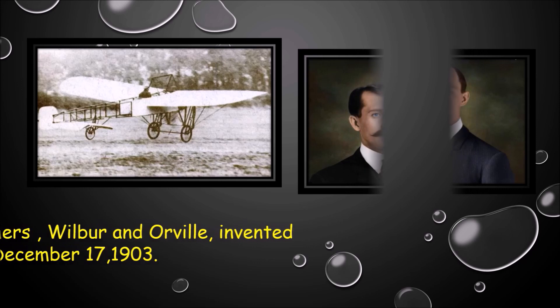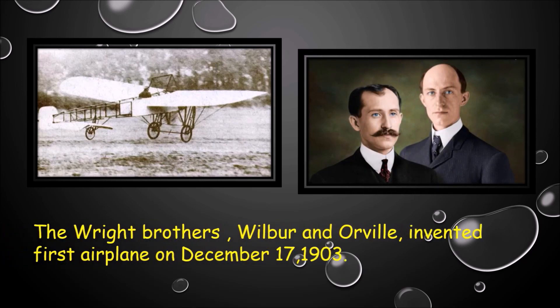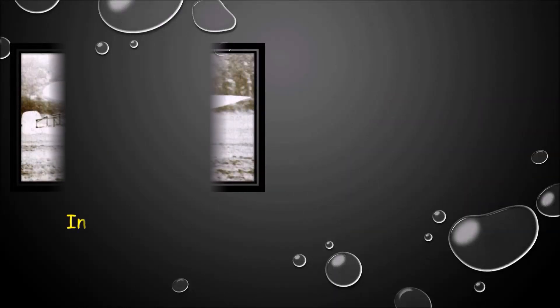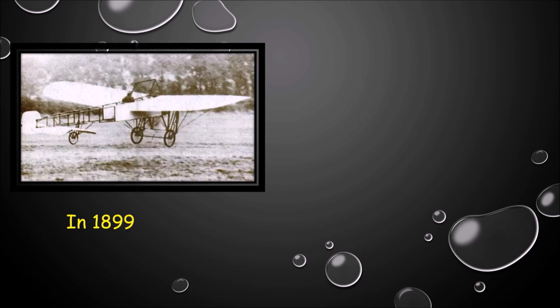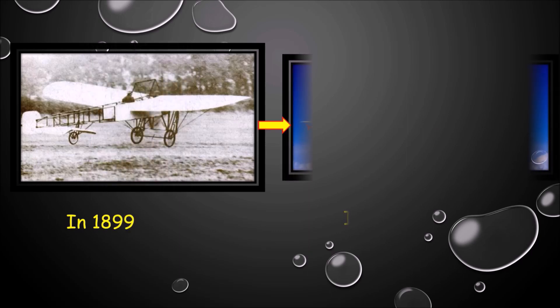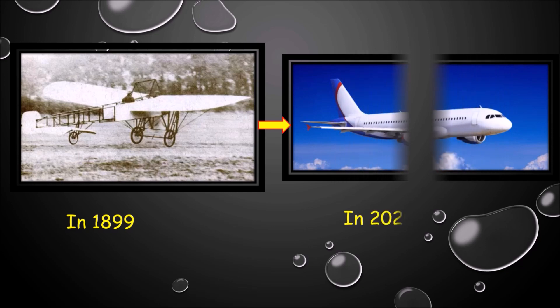The first air mode of transport was invented by the Wright brothers. Wilbur and Orville Wright invented the first aeroplane on December 17, 1903. Air mode of transport is the fastest mode of transport. In 1903 this was the first aeroplane invented, and in 2020 we are using this aeroplane.